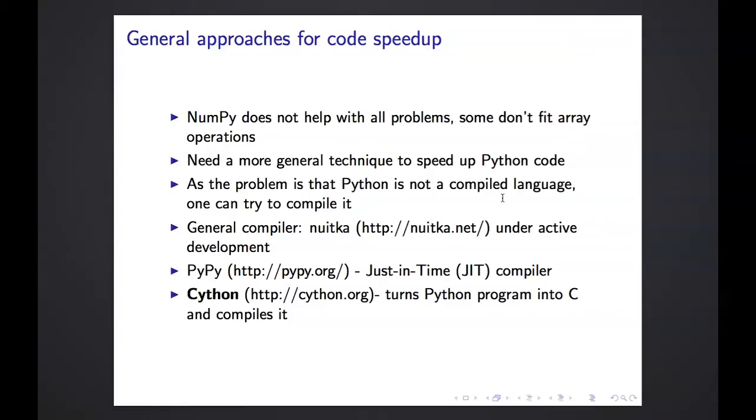So there's very active development going on in these areas. And I can only, in this short talk, talk about one of them. There is a general compiler, called Nuitka under active development. This is actually an approach where you take your Python code, you just compile it and you run it, and no change to the code needs to be made. It looks very promising. Then there is PyPy, a just-in-time compiler. This is an implementation of Python which tries to compile code as you run it. I will not discuss it in this talk, but it's another approach. And finally, what I will discuss is Cython. This is a tool which allows you to turn your Python program into C code and compile it, and this results in faster running code.